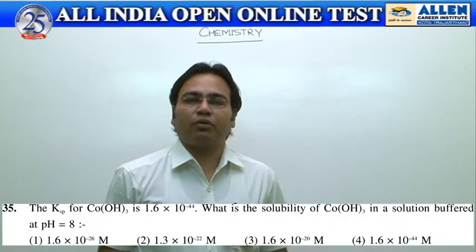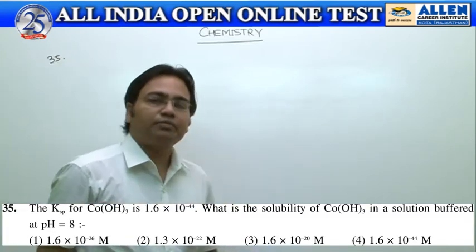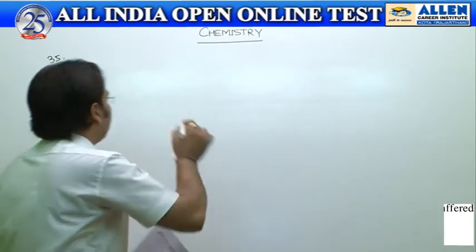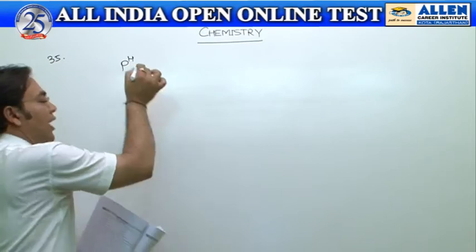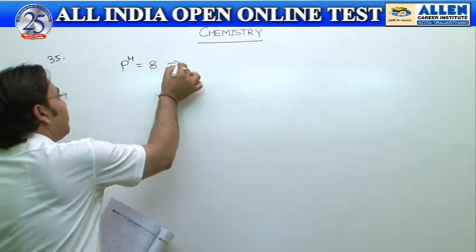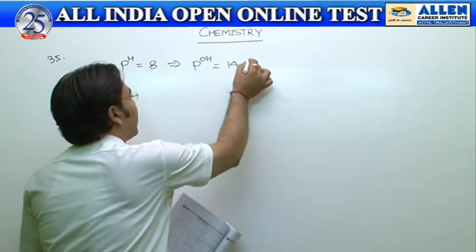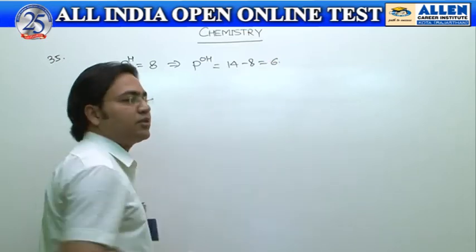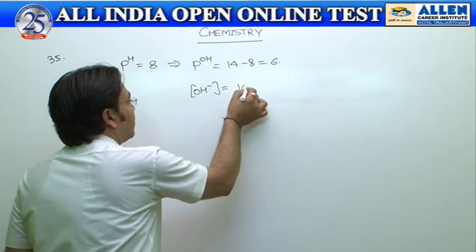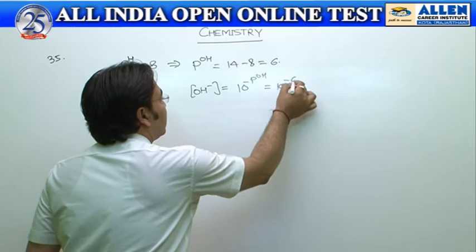Now we will discuss question number 35. It is based on the ionic equilibrium topic. In question 35, KSP of cobalt hydroxide is given, and with the help of a buffer, pH is maintained at 8. If pH is 8, then pOH should be 14 minus 8, which equals 6. Hence, the concentration of OH minus should be 10 to the power minus pOH, so it is 10 to the power minus 6 molar.